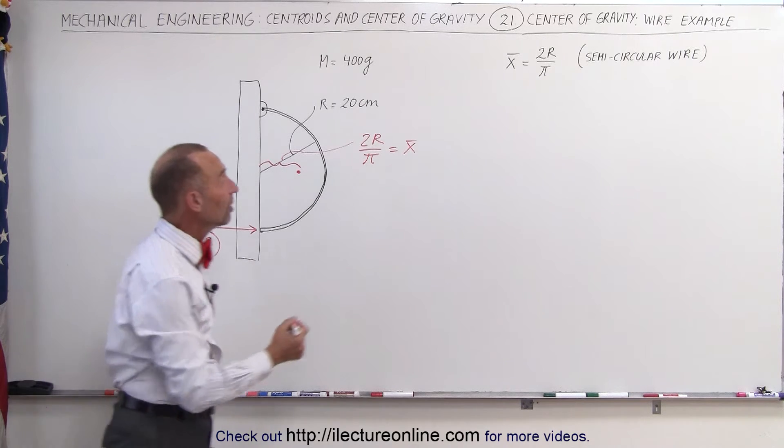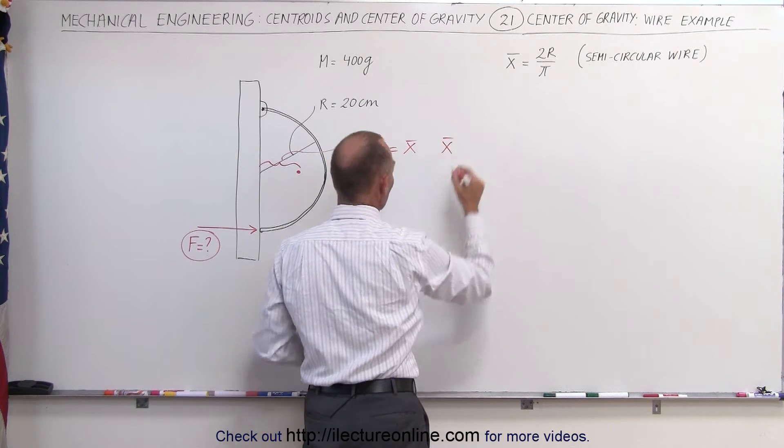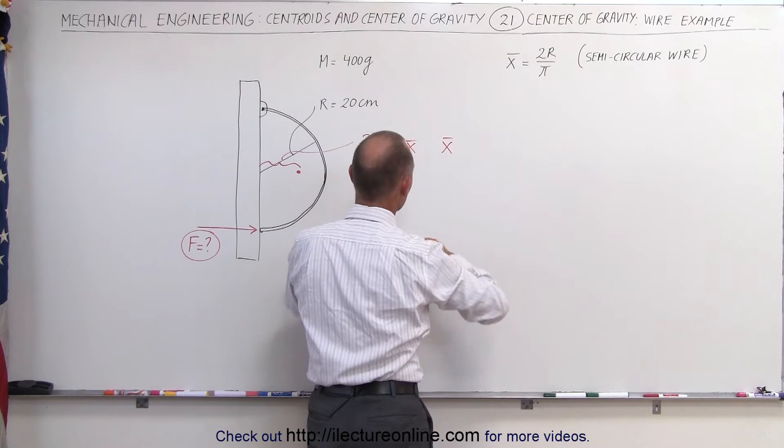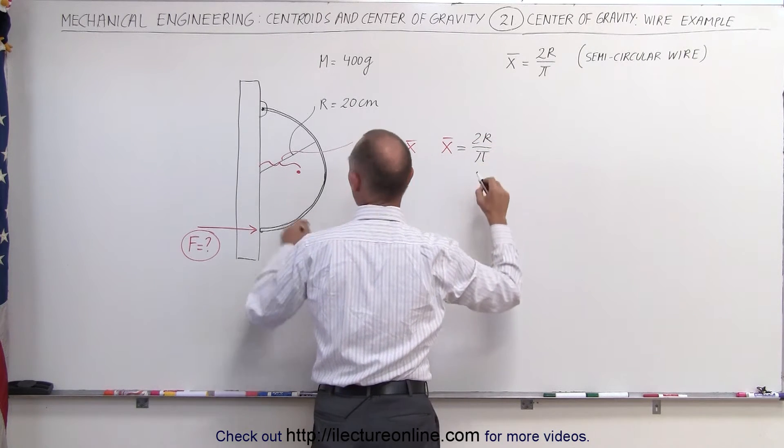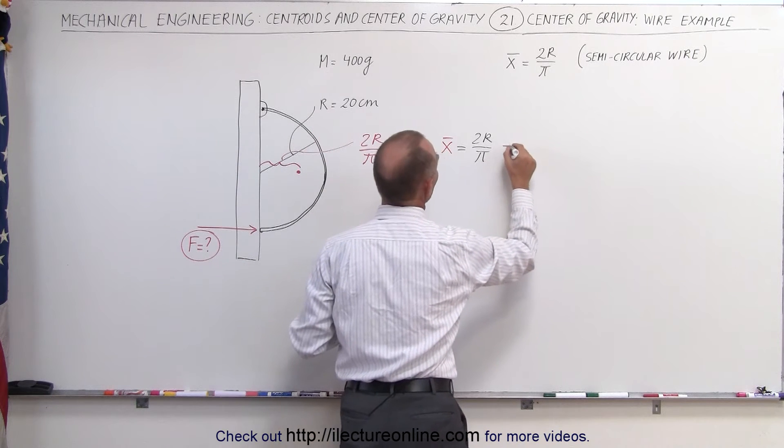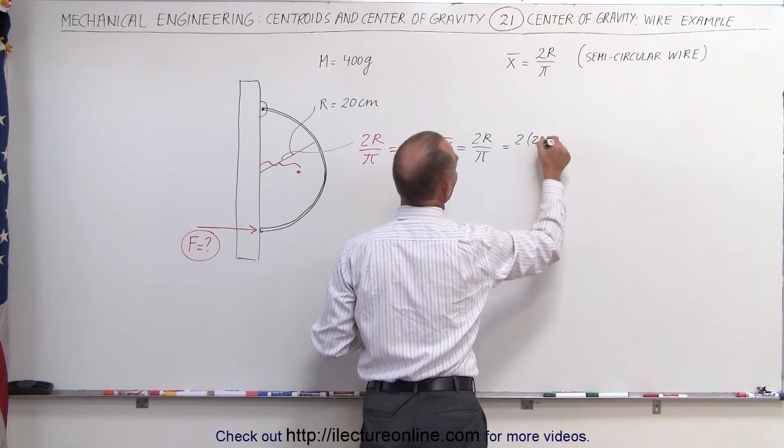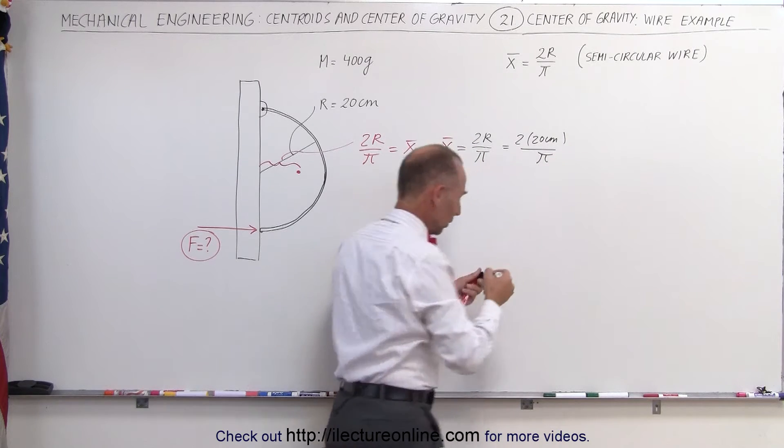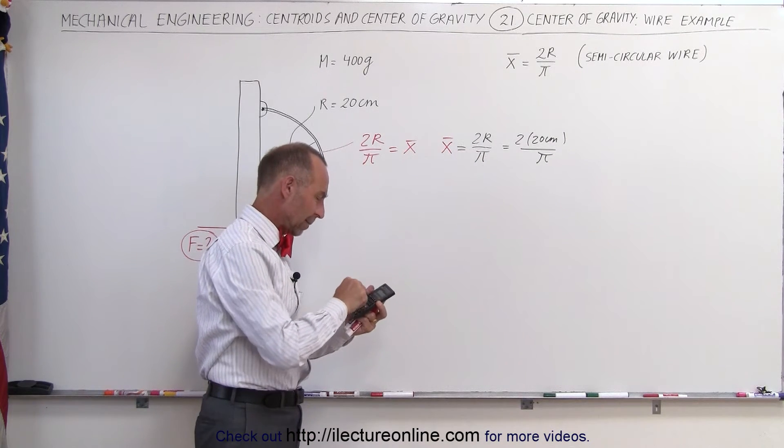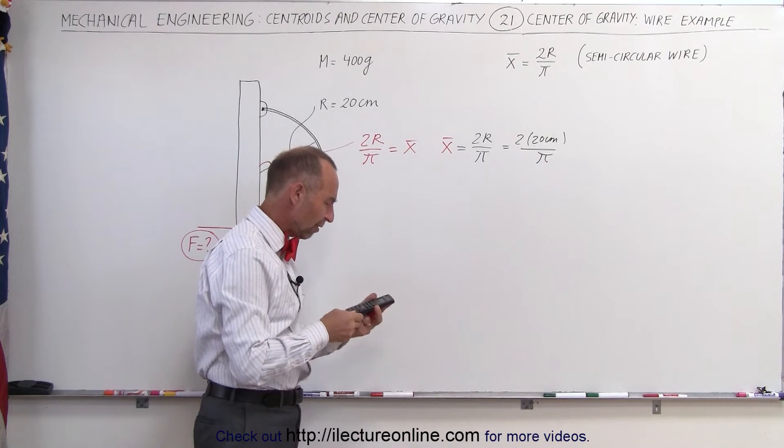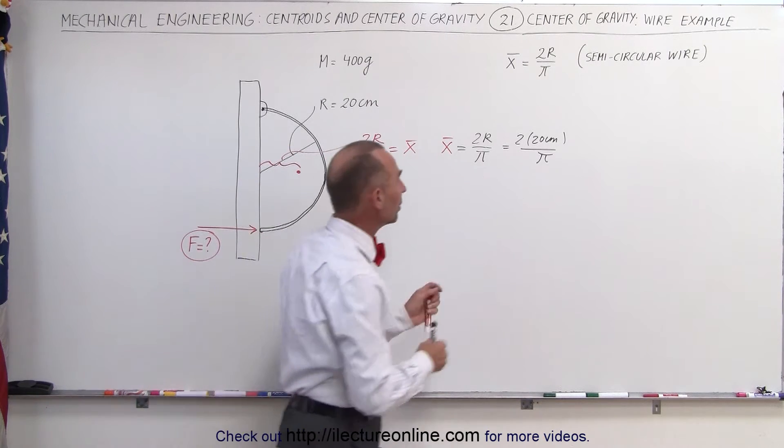Let's find out what that is equal to. The x coordinate equals two times the radius divided by π. The radius here is 20 centimeters. That's 2 × 20 cm / π. With a calculator, we can figure out what that equals: 40/π = 12.7 centimeters.